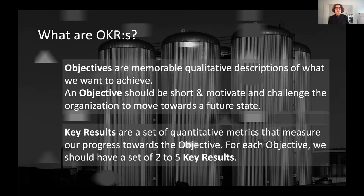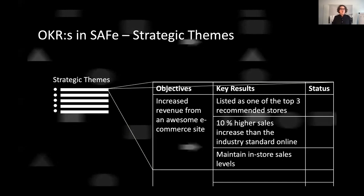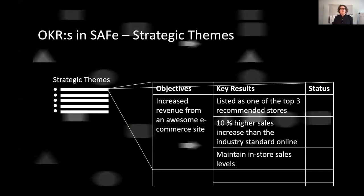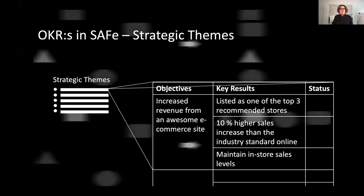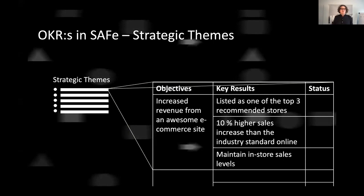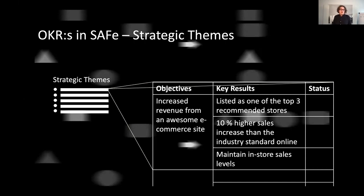The key result is, by definition, a quantitative part-goal of the objective. In SAFe, we are expanding strategic themes into objectives and key results. The key results are expressed with real figures so that we can measure them. Let's be careful of what we measure and what we become if we measure too much. But let's also know how far have I gone, and how long do I have to walk to reach my goal.